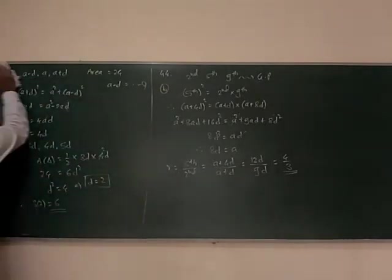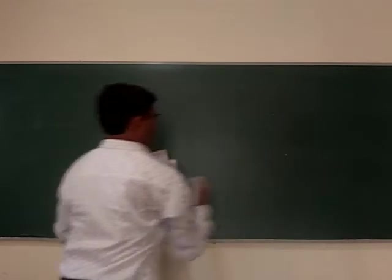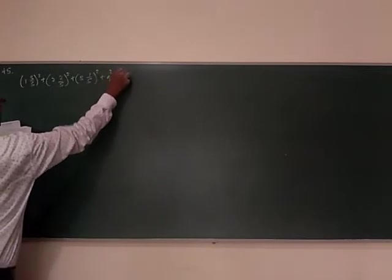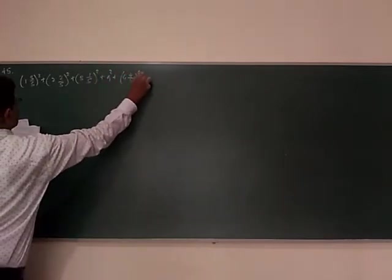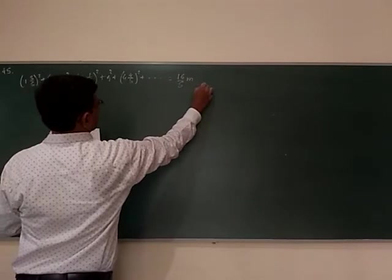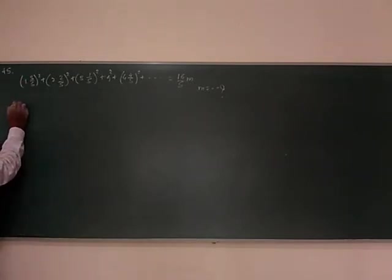Question number 45: Sum of first 10 terms of the series 1 and 3 by 5 square, 2 and 2 by 5 square, plus 3 and 1 by 5 square, plus 4 square, plus 4 and 4 by 5 square equals 16 by 5 times Y. What is the value of Y? Up to 10 terms addition.